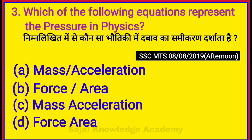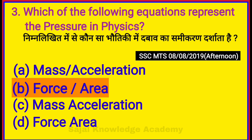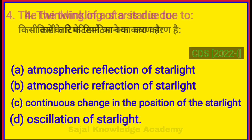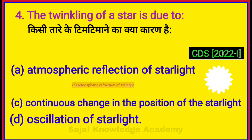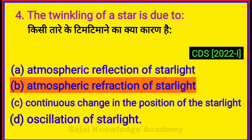Which of the following equations represents pressure in physics? Option B: Force per Area. The twinkling of a star is due to? Option B: Atmospheric Refraction of Starlight.